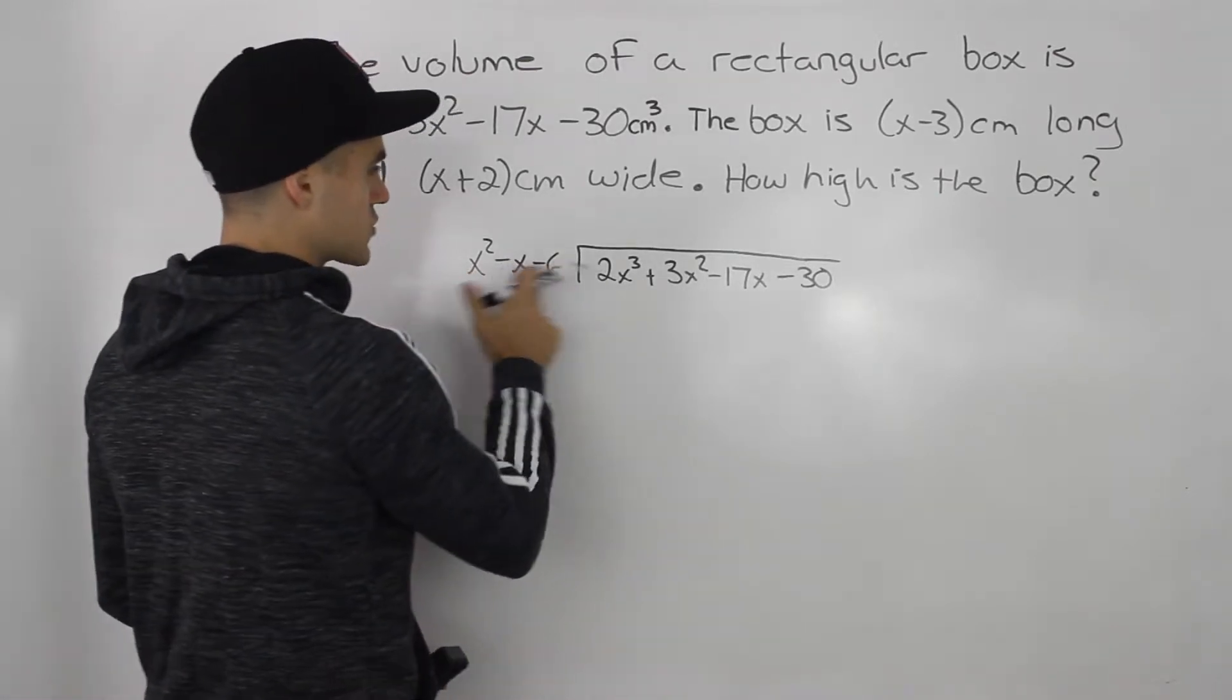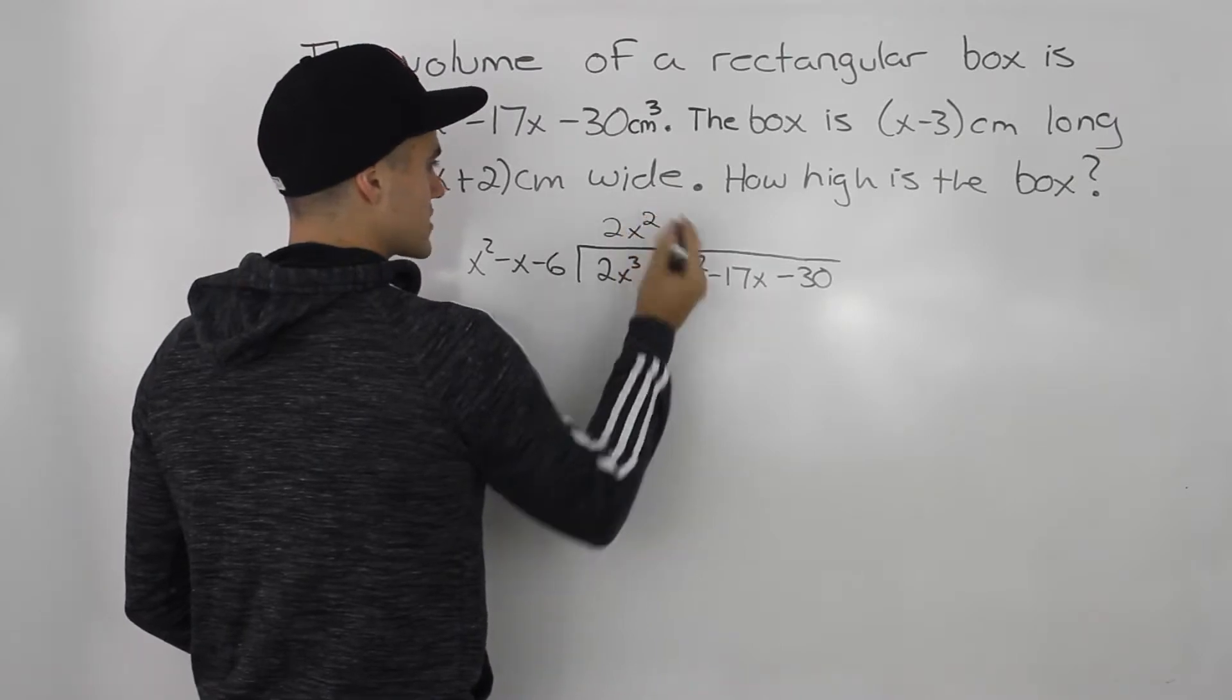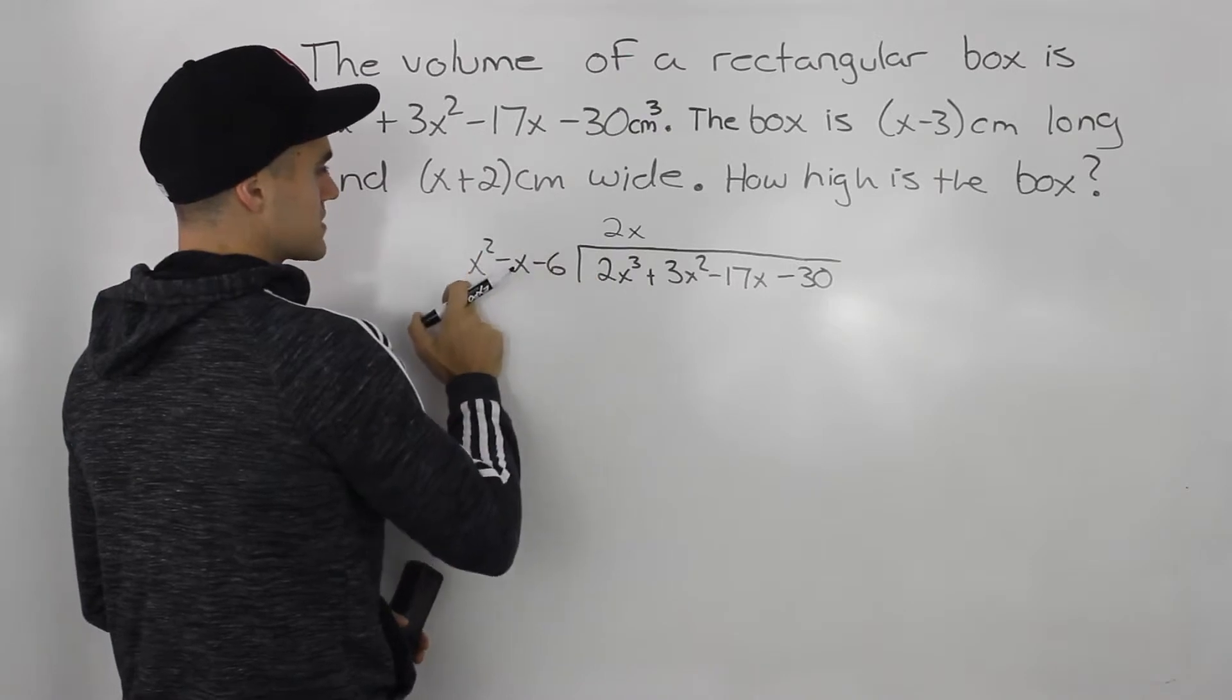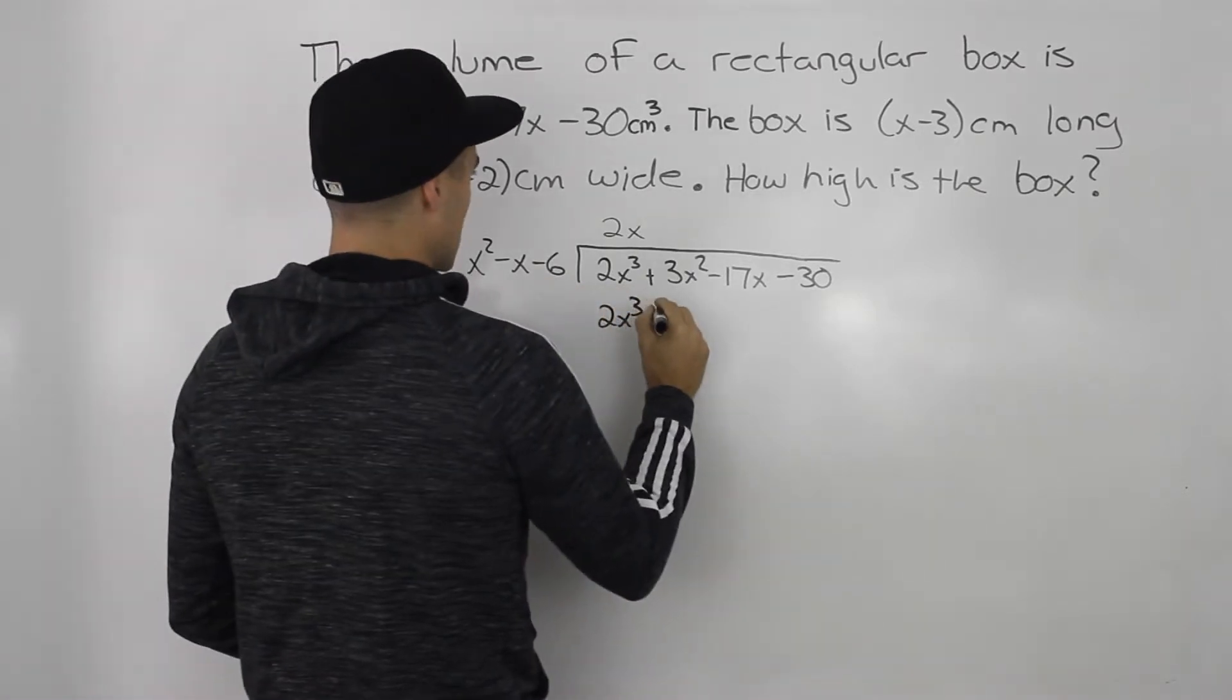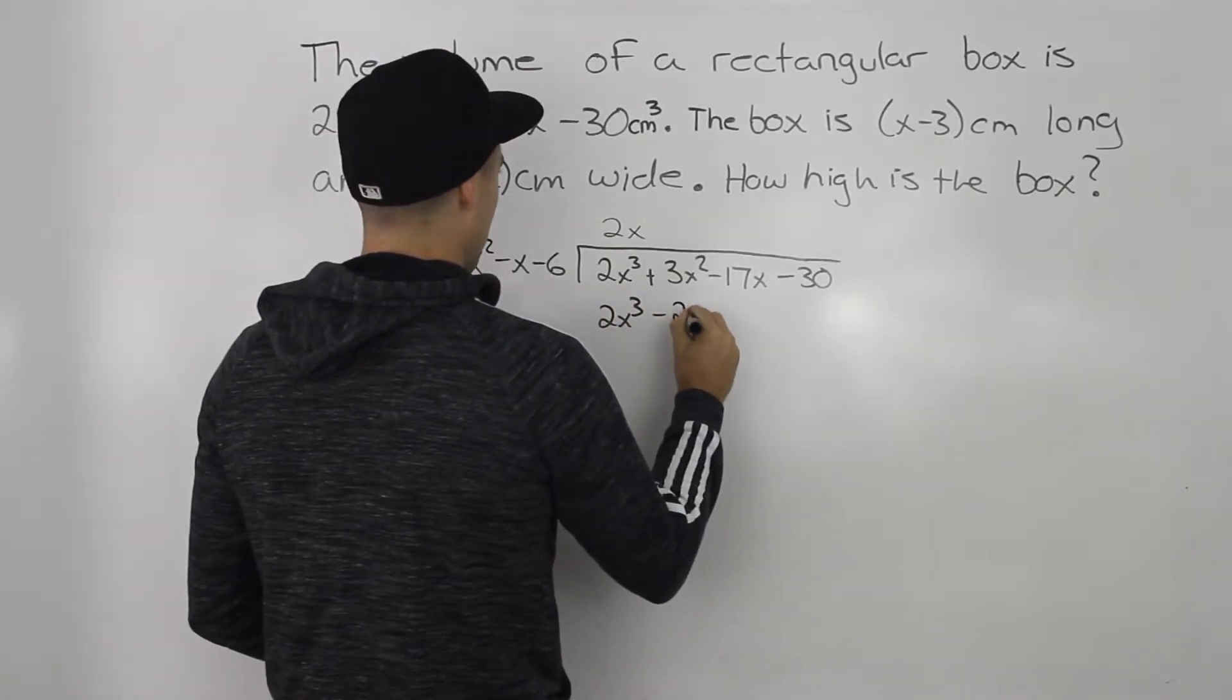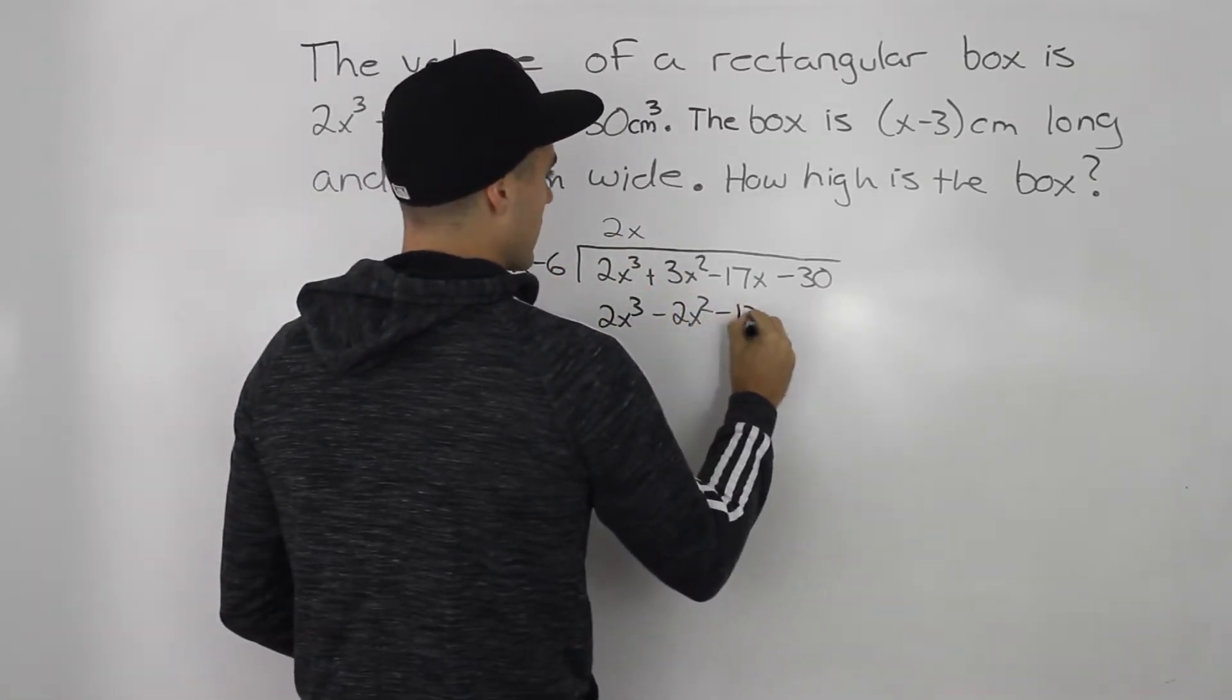So how many times is x² going into 2x³? Well, 2x times. So then 2x times x² is 2x³. 2x times negative x gives us -2x². And then 2x times negative 6 gives us -12x.